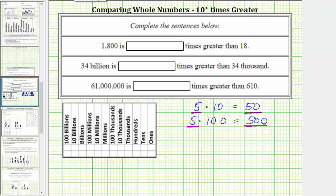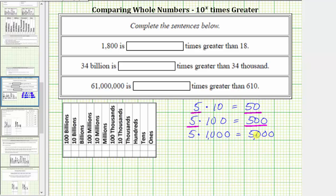For one last example, if we wanted a number that was a thousand times greater than five, we would multiply five by one thousand. Five times 1,000 equals 5,000. This product indicates that 5,000 is a thousand times greater than five.